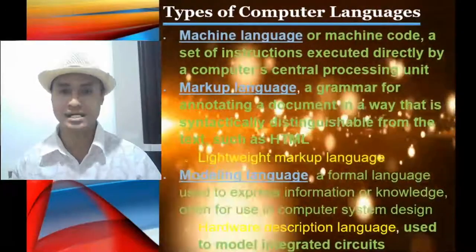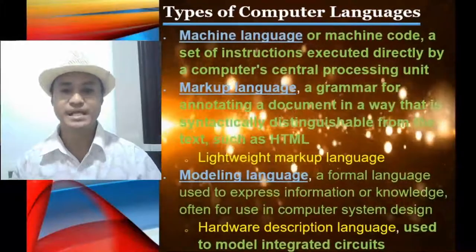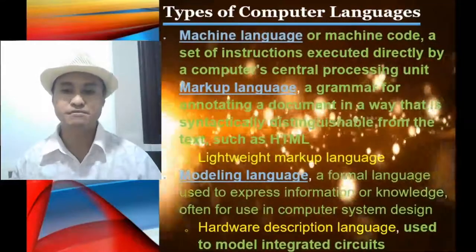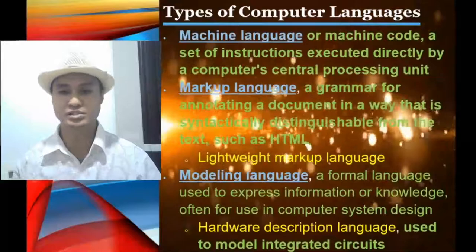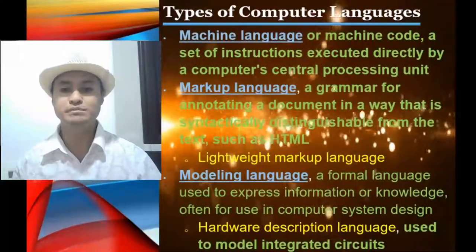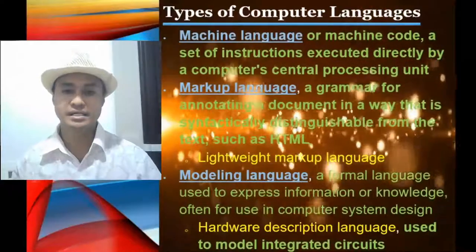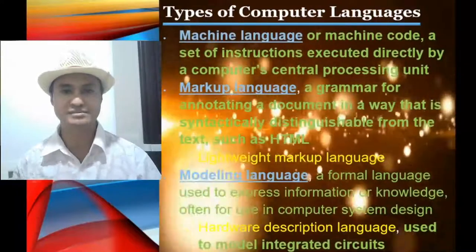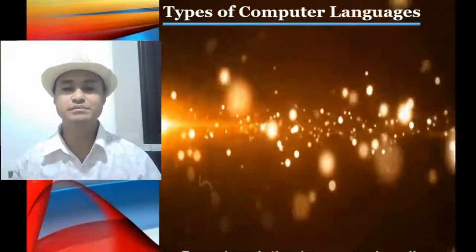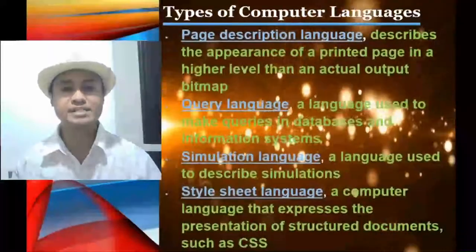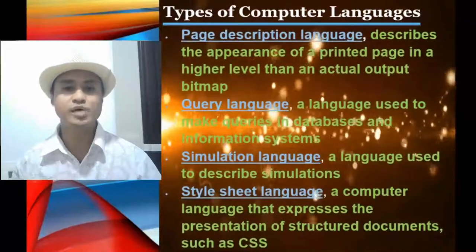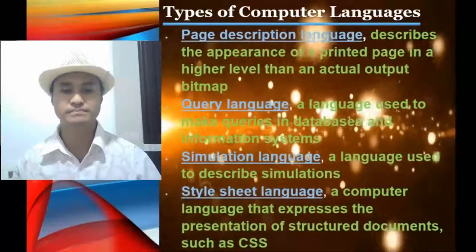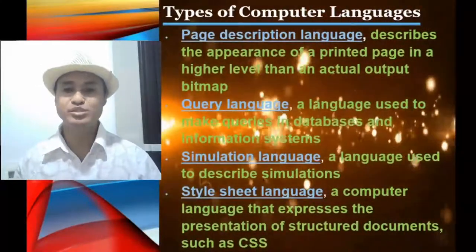We also have markup language, a grammar for annotating a document in a way that is syntactically distinguishable from the text, such as HTML and lightweight markup language. Modeling language is a formal language used to express information or knowledge, often for use in computer system design. Hardware description language is used to model integrated circuits. Page description language describes the appearance of a printed page at a higher level than an actual output bitmap.